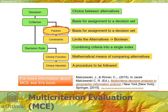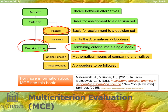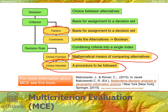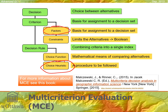Then we have decision rules — how we combine the criteria, factors, and constraints into a single index to assign each location to the decision set. That includes a mathematical function for comparing alternatives or a choice heuristic — a procedure you follow to get the answer. Most of the time in multi-criterion decision analysis, we use choice functions, meaning we mathematically combine things together.